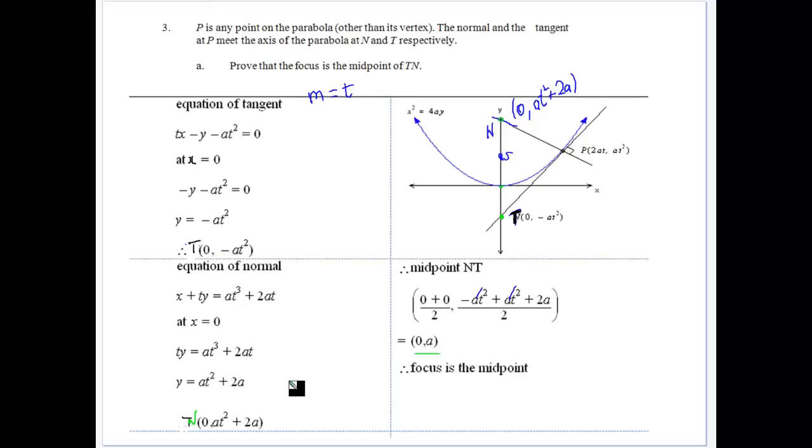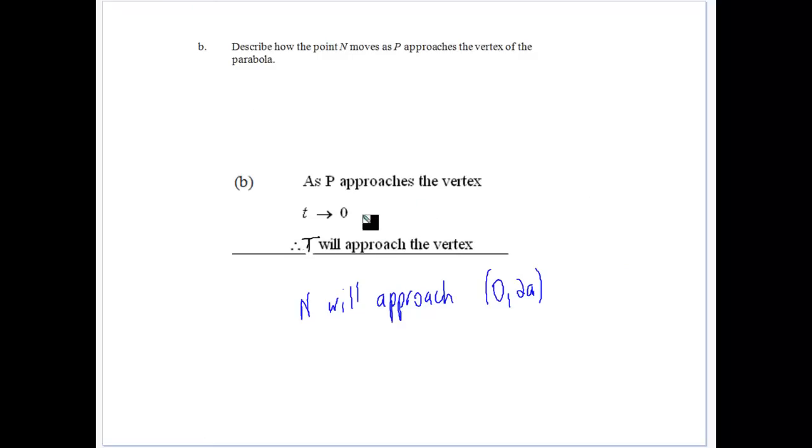Because we sub the value in here. Well, it's going to get a times. As t approaches 0, that's going to get closer to 0. If we look at at squared, that would approach 0, which is just going to leave 2a. So as it approaches the vertex, T approaches the vertex. But N will approach the point (0, 2a). So this is what we're getting with that one there.